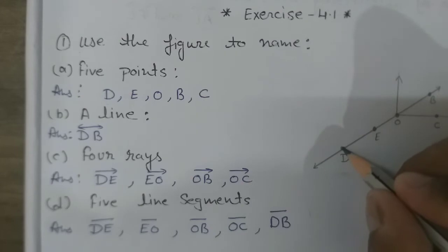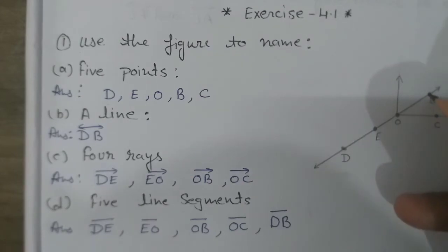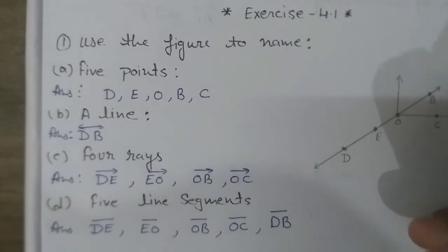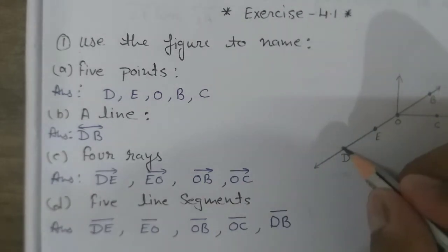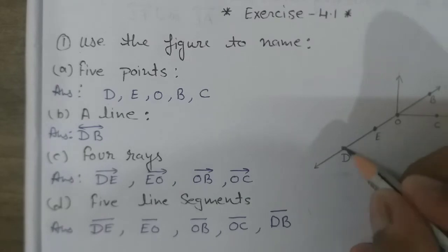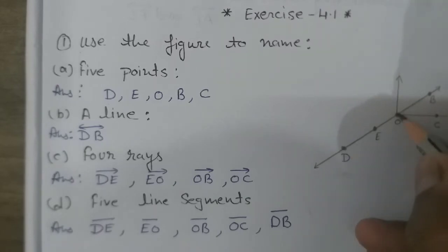The answer for the five points is: point D, E, O, B, and C. The second question asks for a line — that is line DOB.